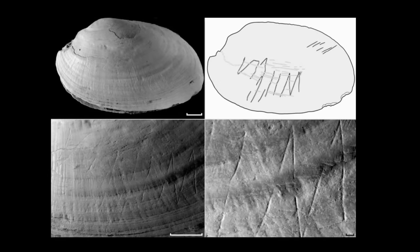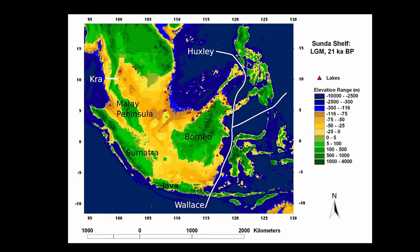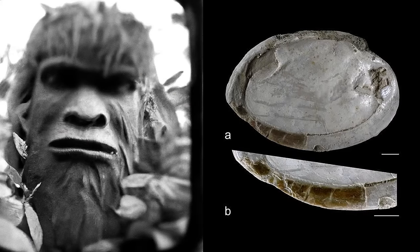Half a million years ago, Homo erectus in Java also created the oldest known shell tools. The palm-sized shells discovered alongside the human remains are raising serious questions today. According to a study published in Nature, Homo erectus may have used them as tools and decorated some of them with geometric engravings. The shells, approximately half a million years old, are the earliest evidence of such decorative marks as well as the first known use of shells to make tools. Archaeologists collected eleven freshwater shell species at the site, the majority from a now-extinct freshwater mussel.